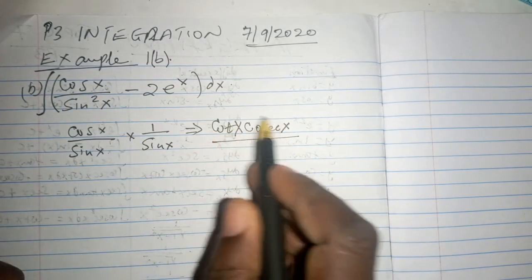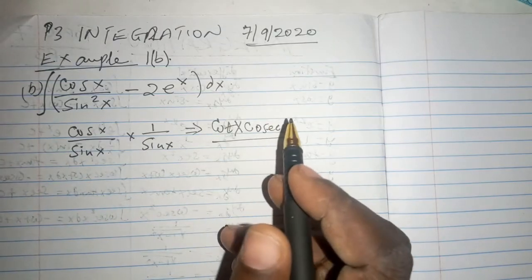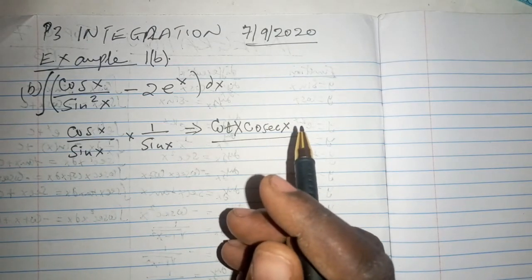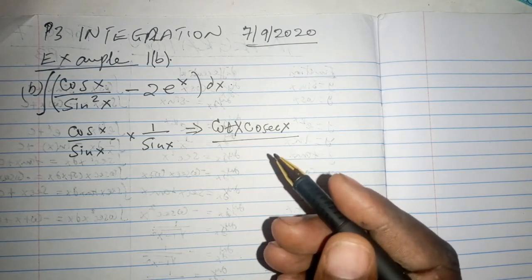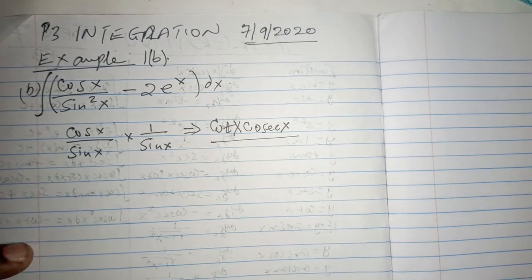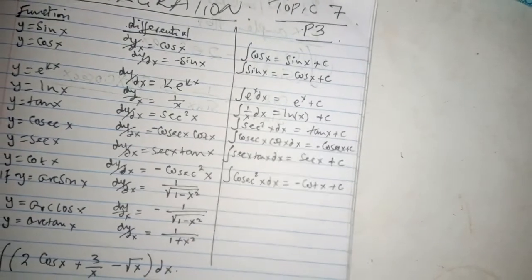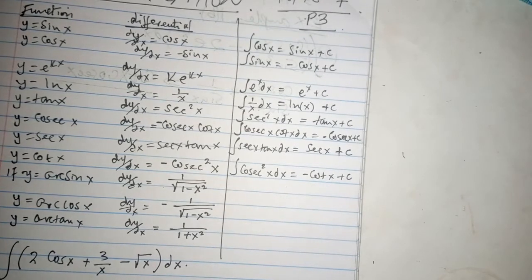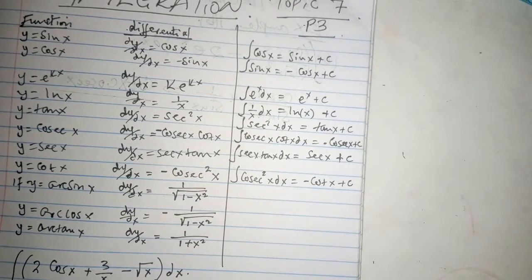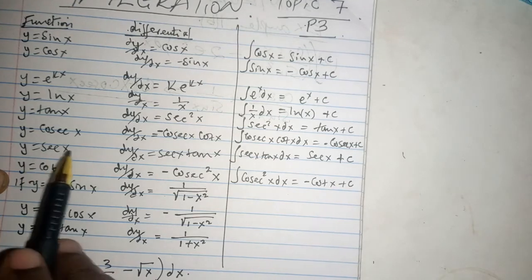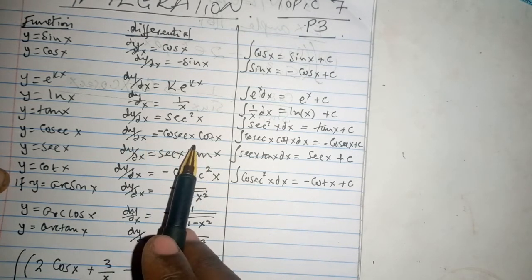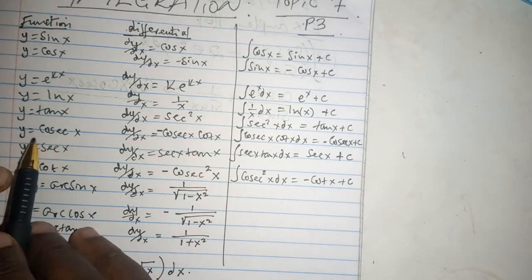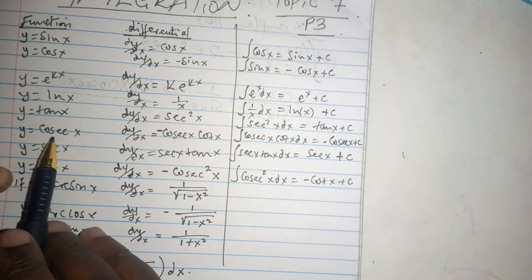Before we even go further, we may wish to integrate this part using the standard integration that we have and we know very well. If we could borrow heavily from the differential part, let's see if we had to differentiate something which gave us the cosec of x times the cot of x.